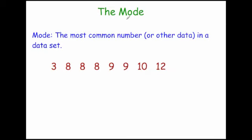In this video we're going to look at the mode. The mode is a particular type of average and it's defined as the most common number in a data set. It could also be the most common word, symbol, or letter depending on the type of data you've been given.